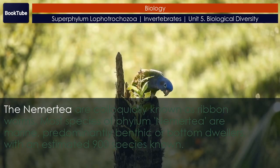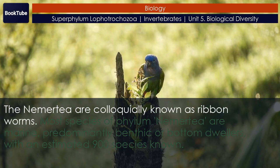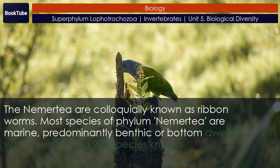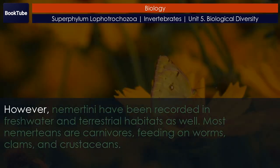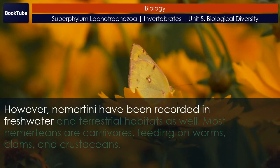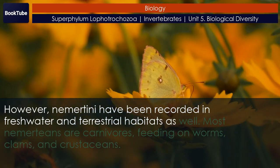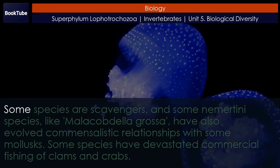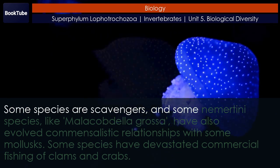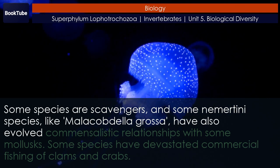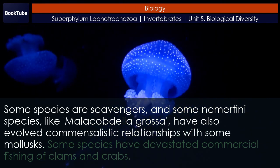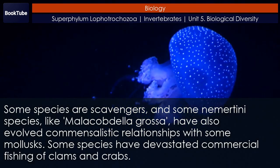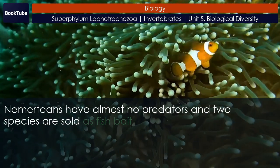Phylum Nemertea. The Nemertea are colloquially known as ribbon worms. Most species are marine, predominantly benthic or bottom dwellers, with an estimated 900 species known. However, Nemertini have been recorded in freshwater and terrestrial habitats as well. Most Nemerteans are carnivores, feeding on worms, clams, and crustaceans; some species are scavengers. Some Nemertini species, like Malacobdella grossa, have evolved commensalistic relationships with some mollusks. Some species have devastated commercial fishing of clams and crabs. Nemerteans have almost no predators, and two species are sold as fish bait.